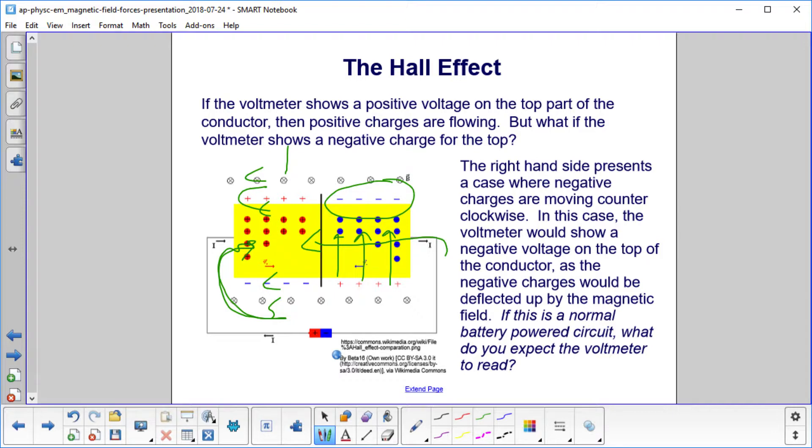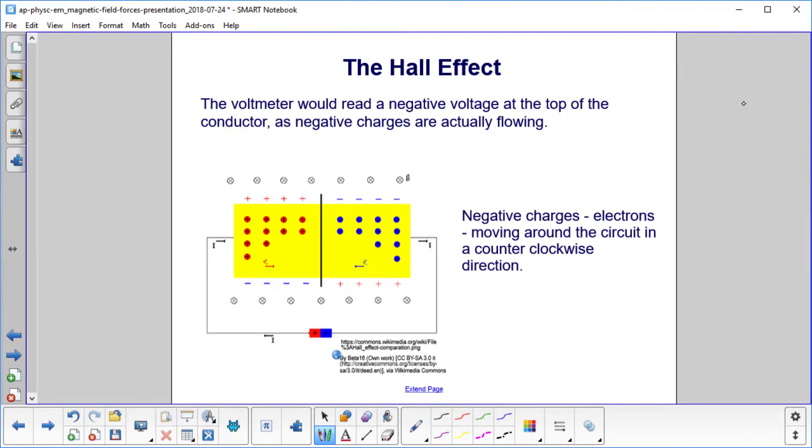If we have negative charges flowing, our voltmeter would read negative up there. If we had positive charges, it would read positive. If this is a normal battery-powered circuit, the voltmeter would read a negative voltage at the top of the conductor as negative charges are actually flowing.